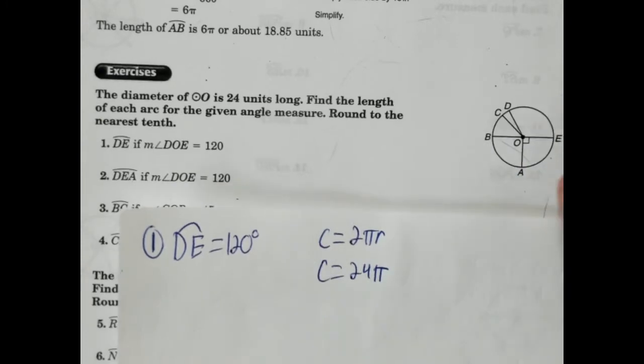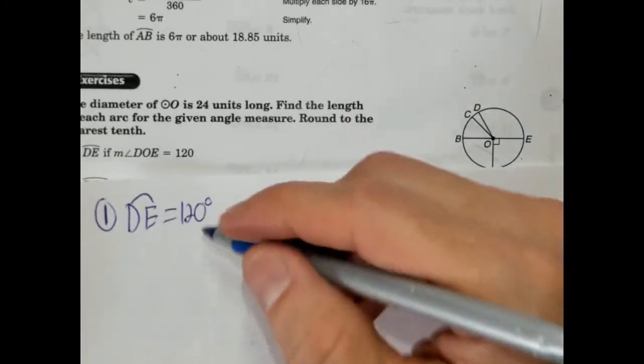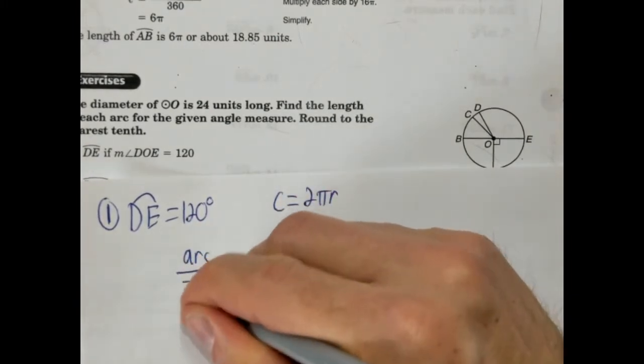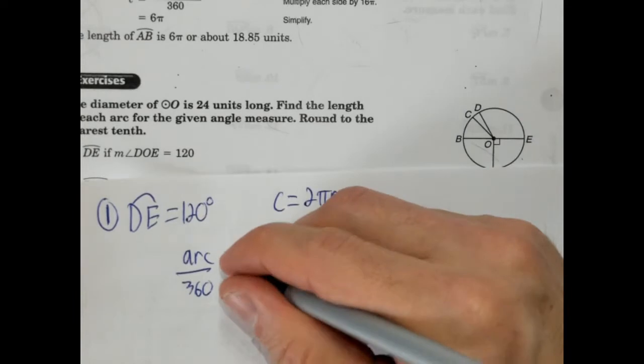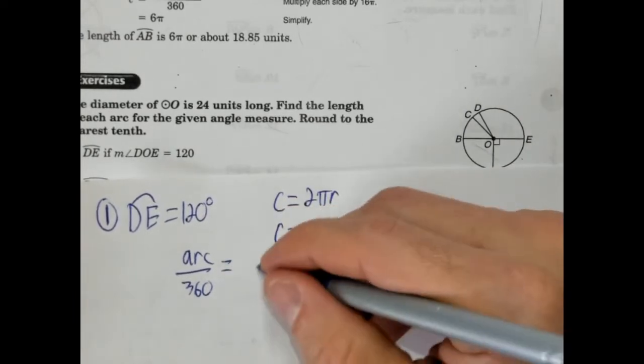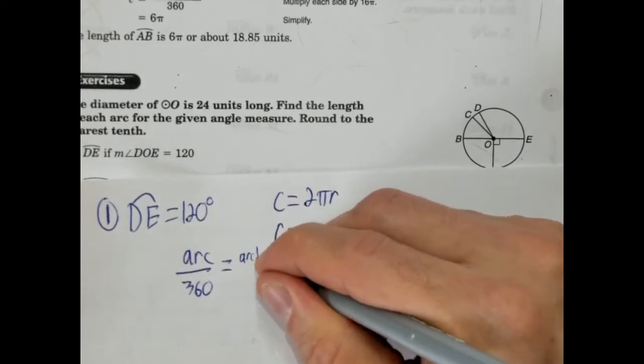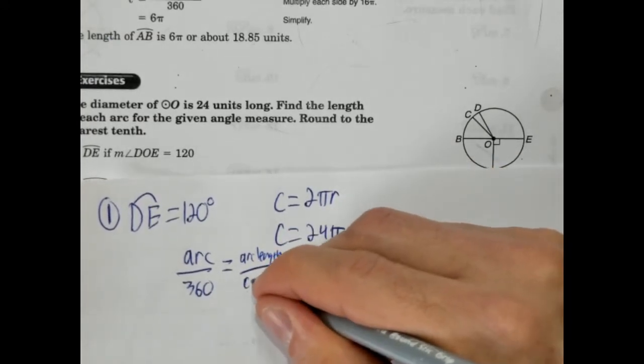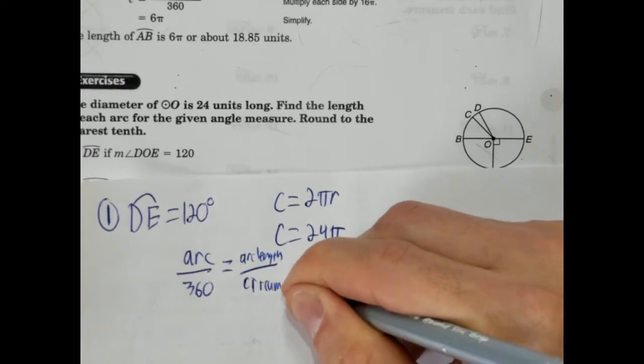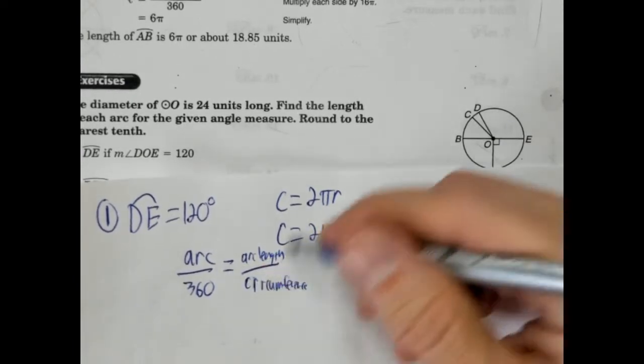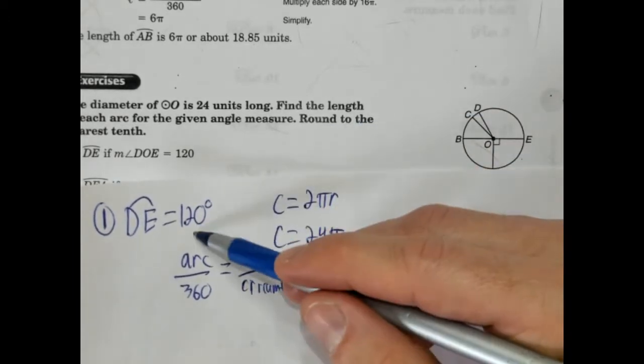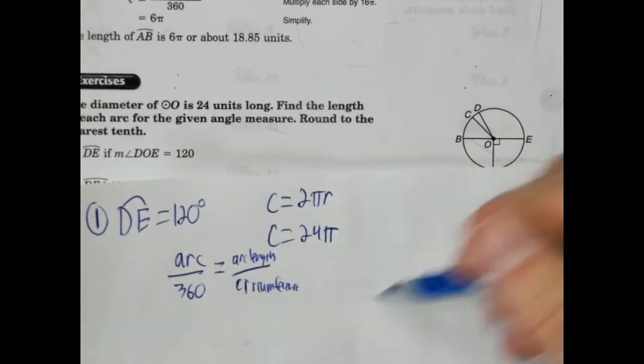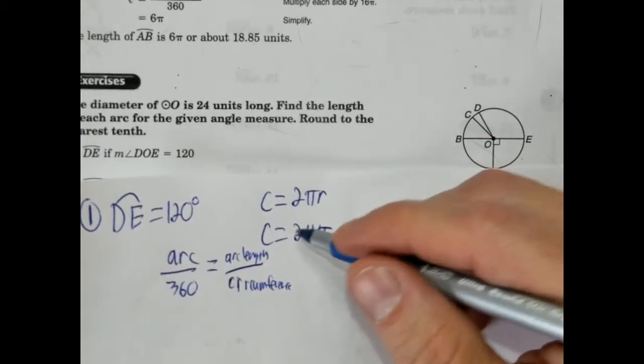Now, 120 degrees, we're going to set this up as a ratio. What we do is we take the arc over 360, and we're going to set that equal to the arc length over the entire circumference. So it's a proportion. We know that the relationship between the arc and 360 degrees would be the same as the arc length over the entire circumference because the circumference is the entire length around. So let's go ahead and plug these in.